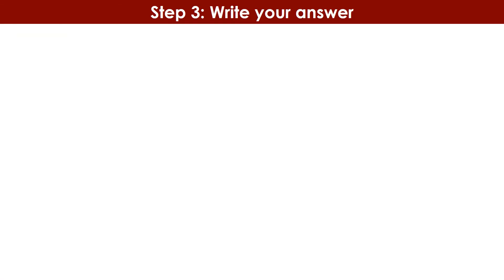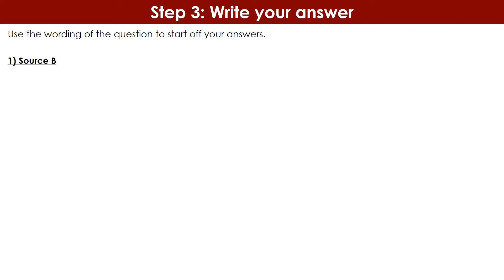Once you've gone through each source and interpretation with your highlighters, you need to put this into an answer. As with any GCSE history question, use the wording of the question to start. Students often say starting is the hardest part, but it's easy once you learn to use the question wording to your advantage. Because the question asks 'how useful are they,' you start your first paragraph talking about source B and say: 'Source B is useful.'